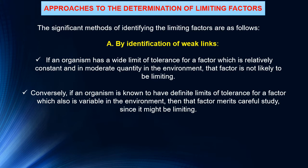For example, oxygen is so abundant, constant, and readily available in above-ground terrestrial environments that it is rarely limiting to land organisms, except for parasites or organisms living in soil or at high altitudes. On the other hand, oxygen is relatively scarce and extremely variable in water, and thus it is often an important limiting factor to aquatic organisms, especially animals.